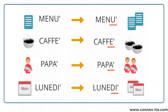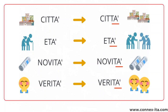These words mean 'menu', 'coffee', 'daddy', and 'Monday'. The next ones are feminine: città is 'the city', età means 'age', novità is 'the news', and verità is 'the truth'. Città, età, novità, verità — none of these change in the plural.